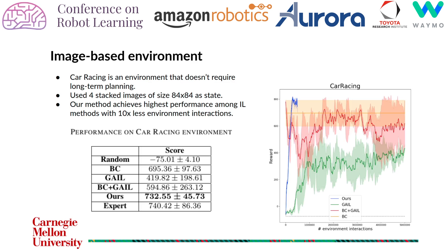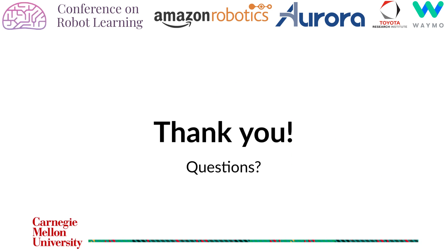Finally, we compare our method in a high-dimensional image-based environment. We use the car racing environment which provides the top view of a car running on the track as its state. GAIL-based methods are very unstable in high-dimensional environments like these. But our method surpasses every other baseline in less than 10 times the number of environment interactions, which shows the versatility of our method. More details can be found in our paper. Thank you, I will be taking questions now.